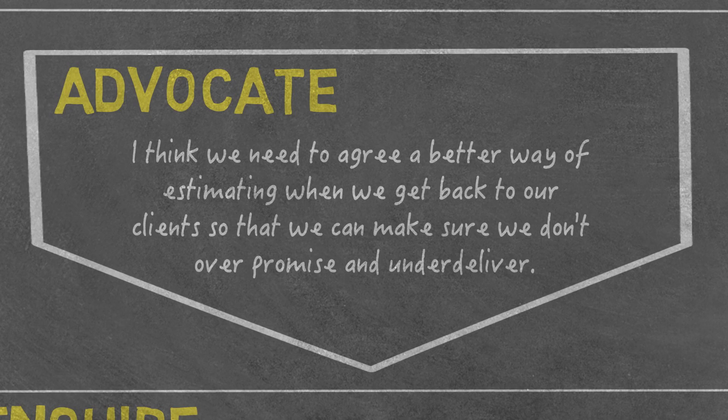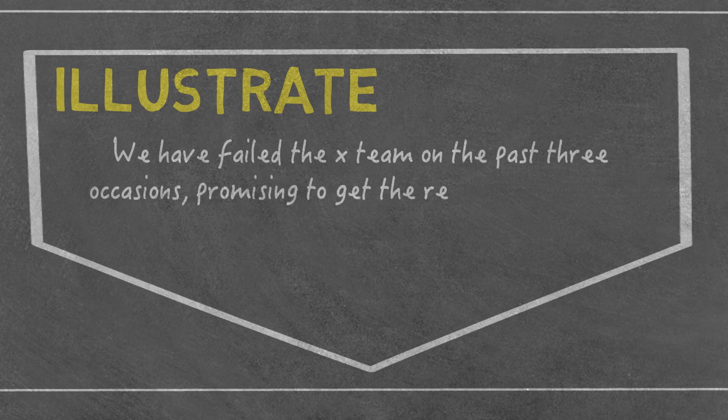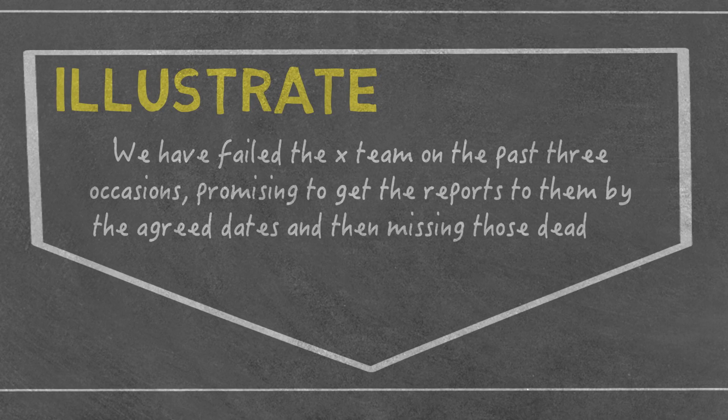Now I move to the third step and I'm going to illustrate the reason why we need to make this change. So I might say: 'You know, we failed the X team on the past three occasions, promising to get the reports back to them by agreed deadlines and missing them — in one case we missed it by 10 days.' That's it. We've created the motivation to do something about the problem and highlighted the consequence, the result, the significance of the issue by illustrating it.